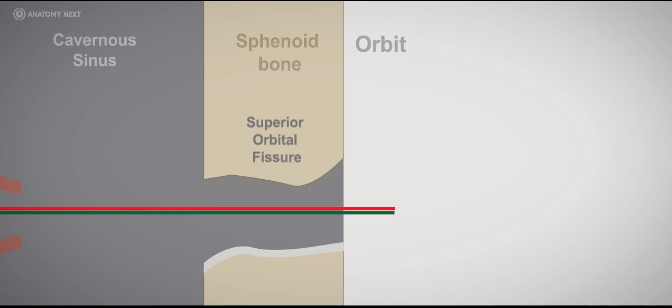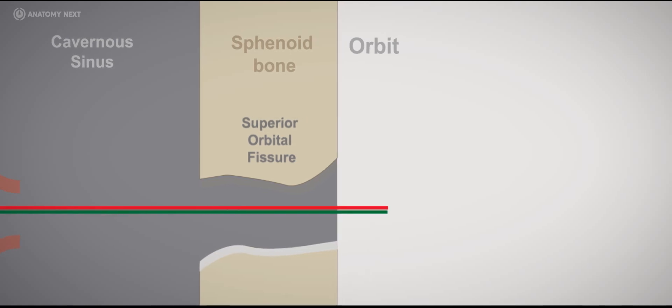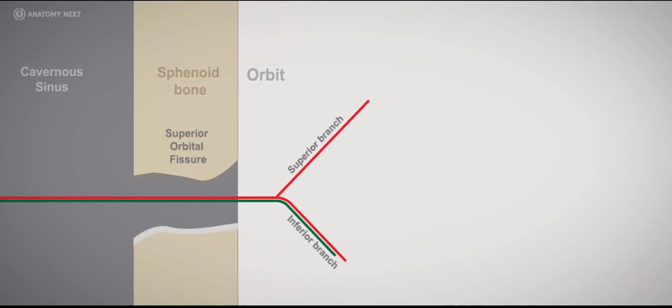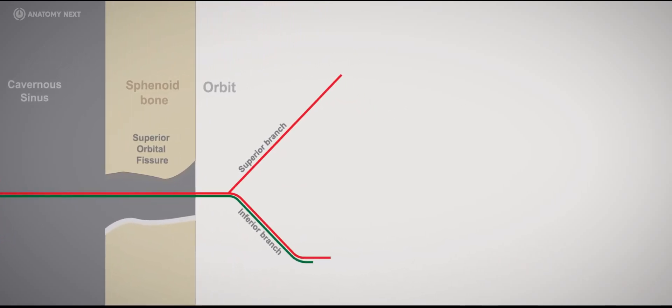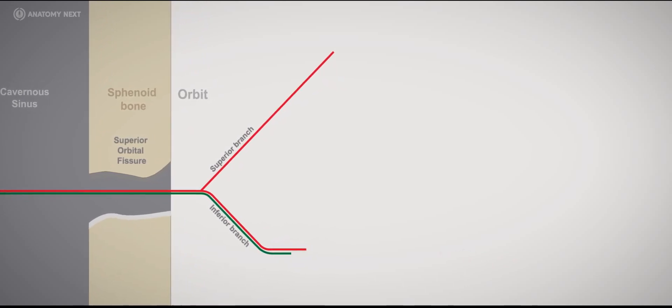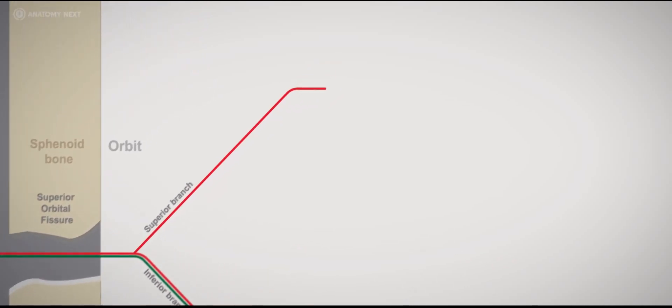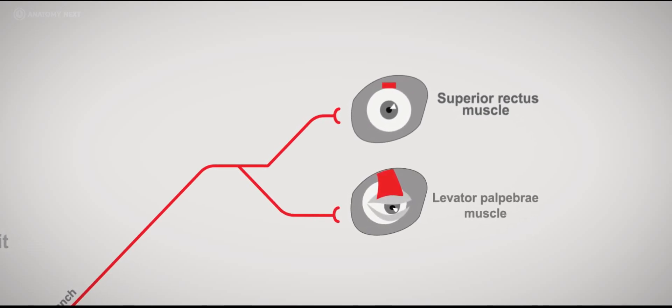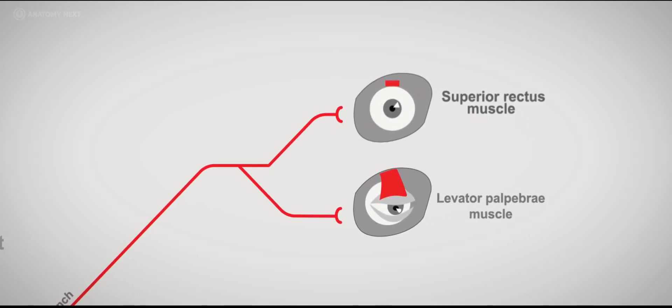After entering the orbit, it divides into the superior division and the inferior division, which is larger. Both divisions run beneath the trochlear and ophthalmic nerves at the beginning. The superior division then passes above the optic nerve to supply the superior rectus muscle and gives off a branch that innervates the levator palpebrae superioris muscle, therefore it contains only motor fibers.